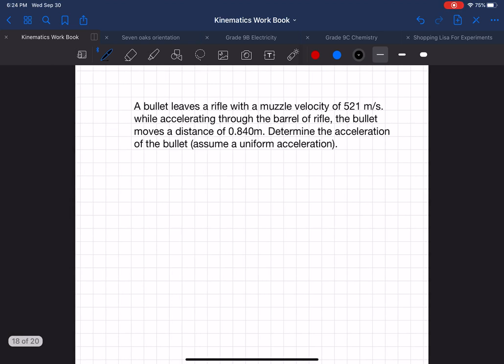The next question now is: a bullet leaves a rifle with a muzzle velocity of 521 meters per second while accelerating through the barrel of a rifle. The bullet moves a distance of 0.840 meters. Determine the acceleration of the bullet, assume a uniform acceleration. So again, we want to write down every component of this question into the factors that we have, and which therefore we can figure out which formula we can use. So vf we know is 521 meters per second, so that means vi must equal zero.